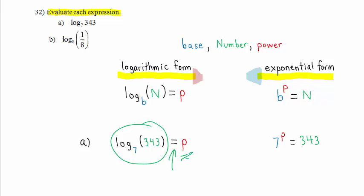So we ask ourselves, what is the power p? It's not 1. 7 to the 1 is 7. It's not 2. 7 squared is 49. The answer is p equals 3, because 7 to the 3 power is 343. Therefore, log base 7 of 343 is equal to 3. That is our answer.